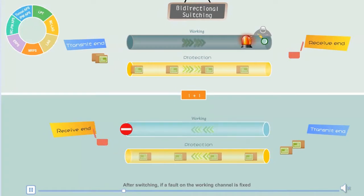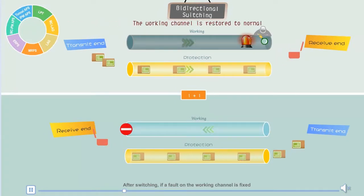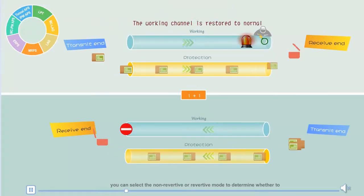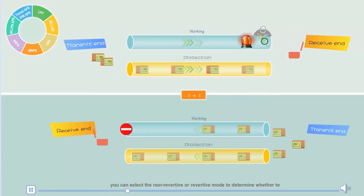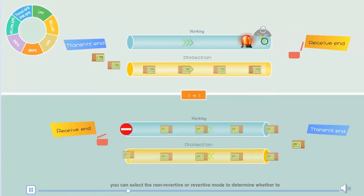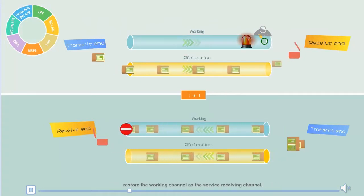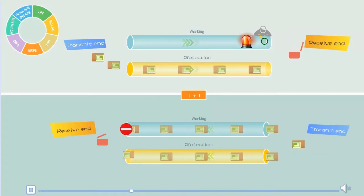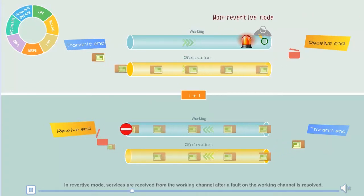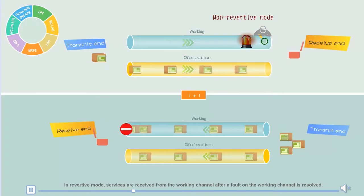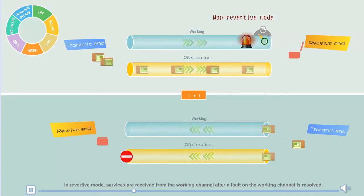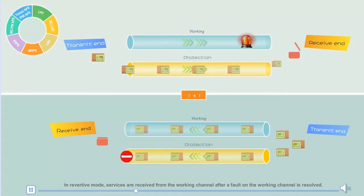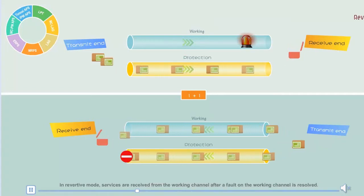After switching, if a fault on the working channel is fixed, you can select the non-revertive or revertive mode to determine whether to restore the working channel as the service receiving channel. In non-revertive mode, services are still received from the protection channel even after a fault on the working channel is resolved.